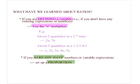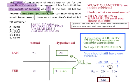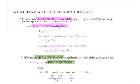For instance, from the last problem: if you have 3x + 40 and 2x in a 5 to 3 ratio, because you already have those existing expressions you don't want to redefine more variables. Instead, just take those expressions and throw them into a proportion. These approaches are mutually exclusive — there's no conflict. If you define a variable, you do that. If you don't have to define anything, you set up a proportion.